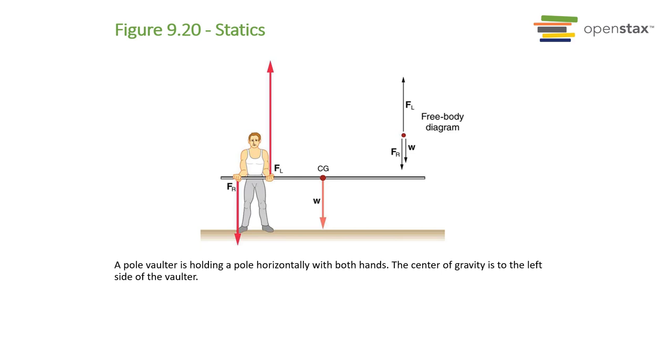Here is an example of a pole vaulter that's holding with both hands, pushing up, pushing down, and the center of mass is also acting as a rotator. Notice what's happening. We've got right hand, left hand, and weight. We have three forces acting and three forces are producing torque.